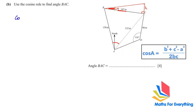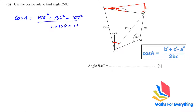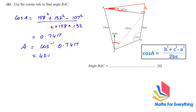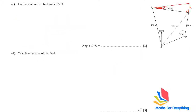Therefore cos A = (158² + 132² − 107²) / (2 × 158 × 132), which gives us 0.7417. To find the angle, we take cos inverse of 0.7417, giving us 42.1 degrees. So angle BAC is 42.1 degrees.